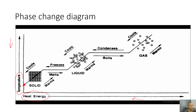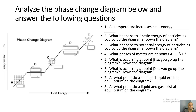As a review: going up the phase change diagram, temperature increases, heat energy increases, particle motion increases, and kinetic energy increases. Going down the phase change diagram, temperature decreases, heat energy decreases, particle motion slows down, kinetic energy decreases, but potential energy increases.